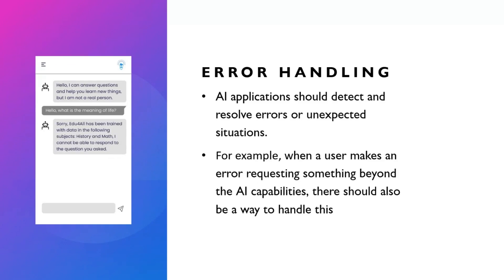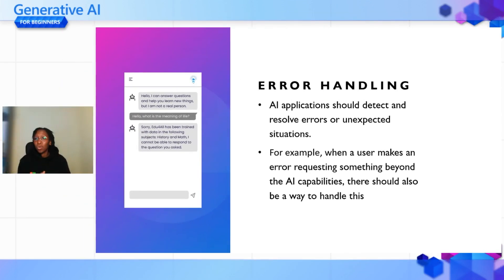The other bit is error handling — if the application does not perform as expected, how do you handle errors? For example, if a student asks 'What is the meaning of life?' and the application was only trained on history and math, it should respond: 'Sorry, I've only been trained with data on history and math. I cannot respond to the question you asked.' You should define the full scope of your application and handle errors gracefully.